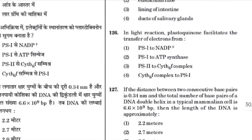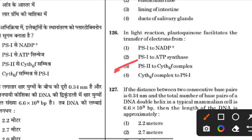In the light reaction, plastoquinone facilitates the transfer of electrons from PS2 to the cytochrome b6f complex. The answer is 3.